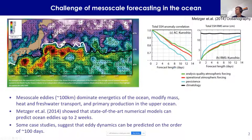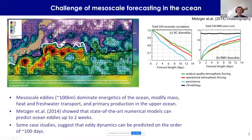Joe Mazgar looked at predictability of these features in deterministic models and found that predictability is about two weeks. On the right there's a die-off curve for anomaly correlation for Kuroshio SSH, and the same view using SSH RMS. They reach 0.6 anomaly correlation at about two weeks. However, some case studies suggest mesoscale dynamics can sometimes be predicted out to order of 100 days.